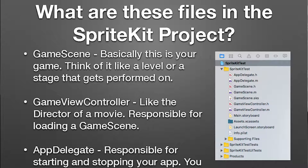In the SpriteKit project we're going to create, it gives you a list of files by default. We're going to focus on the GameScene, which is the core of your game — like a level, the stage that gets set. It's where you put your sprites and have your logic for what happens when they collide. You can have multiple scenes: finish one level and load another, or your main menu might be one scene and the actual game level a different scene.